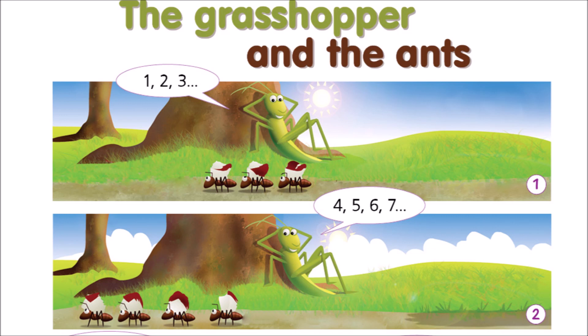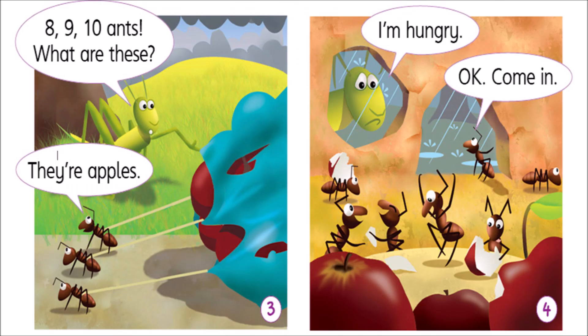1. Listen, point and read: The Grasshopper and the Ants. 1, 2, 3, 4, 5, 6, 7, 8, 9, 10. Ants. What are these?